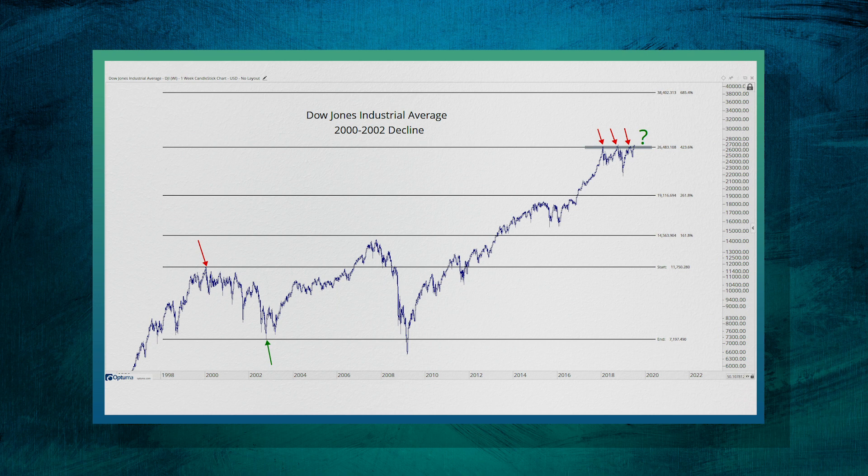If you look at that 2000 peak down to the 2002 low, prices right now in the Dow Jones Industrial Average are exactly at the 423.6% extension of that entire decline. That's where the Dow stopped going up in January of 2018.